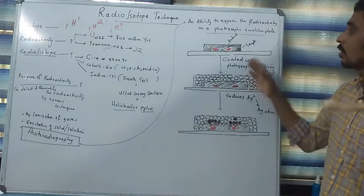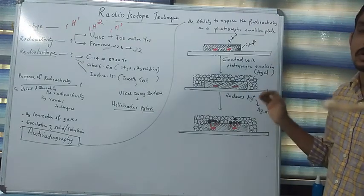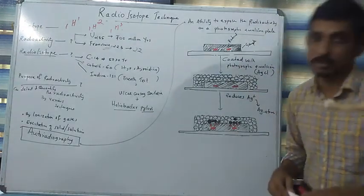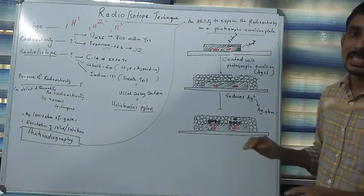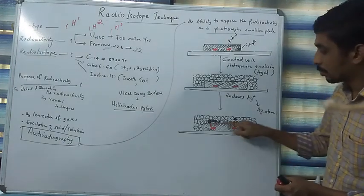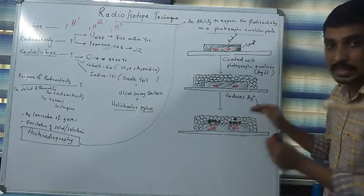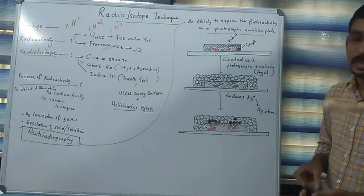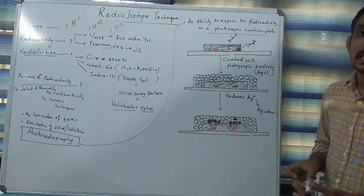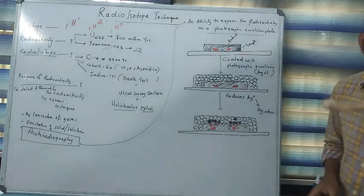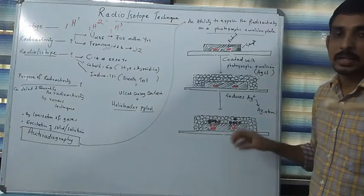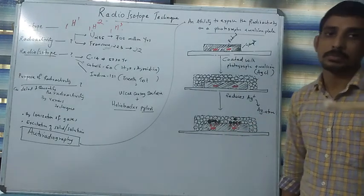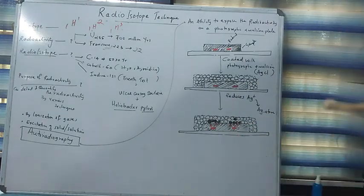You can also use a photographic plate instead of photographic emulsion. We can get a clear mark of the reduced silver atoms, and thereby we can confirm that the given sample contains a specific radioactive element. That's all. Thank you.